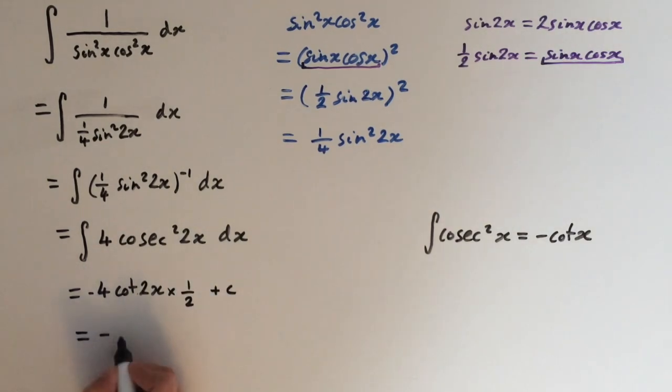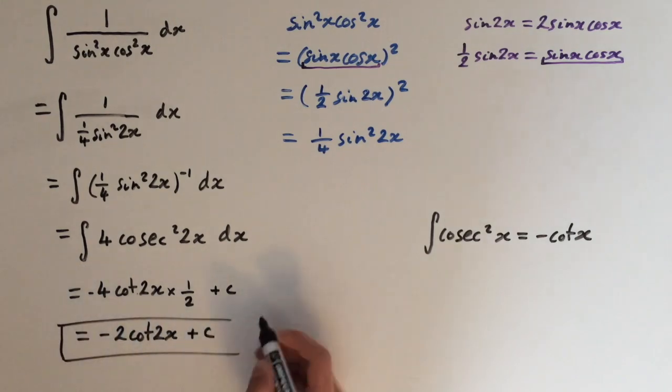So this is going to become minus 2 cot of 2x plus c. So there you go. The integral of 1 over sine squared of x times cosine squared of x.